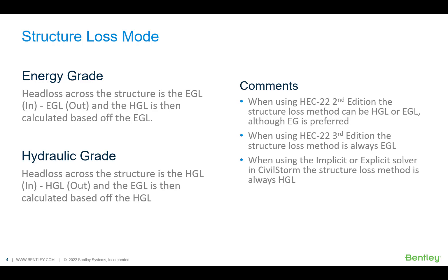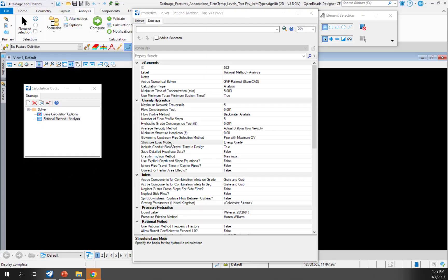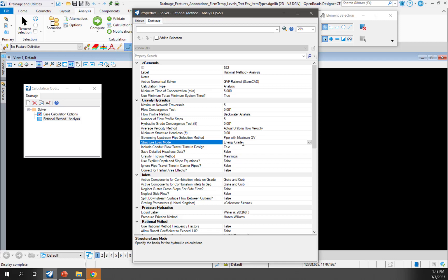If we use the hydraulic grade, then head loss across the structure is going to be the HGL in minus the HGL out, and then the EGL is going to be calculated based off the HGL. Now, there are a few rules here. If you are using HEC 22 second edition, then the structure loss method can be either one — HGL or EGL — but EGL is going to be preferred. If you're using HEC 22 third edition, the structure loss must always be the EGL. And when using the implicit or explicit solver inside of CivilStorm, the structure loss method is always going to be the HGL. So since I will be using HEC 22 third edition, I'll set the structure loss mode to energy grade.